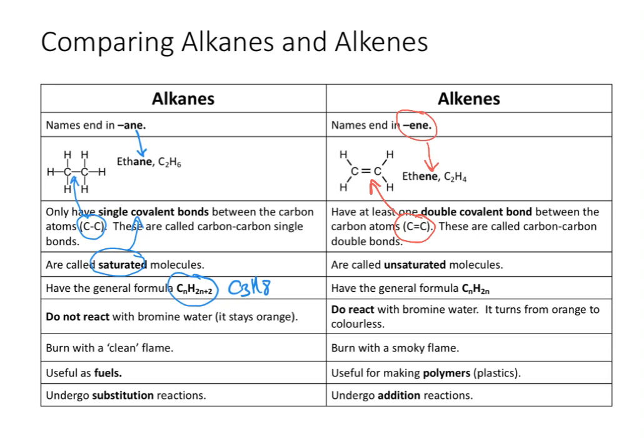Because of the double bond, we call it a carbon-carbon double bond. To be an alkene, there only needs to be one double bond between the carbon atoms. So if there are four, five, or six carbon atoms in the molecule, there only needs to be one double bond for it to be considered an alkene — they don't all have to be double bonds.